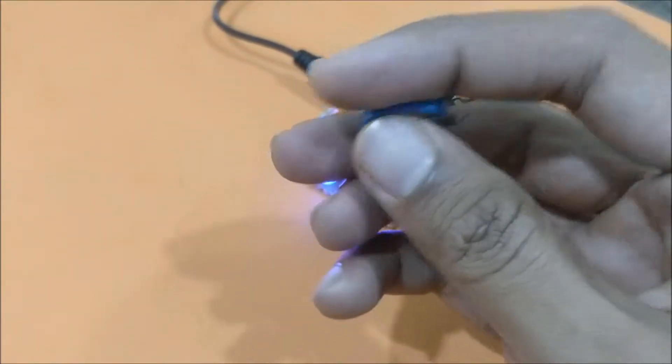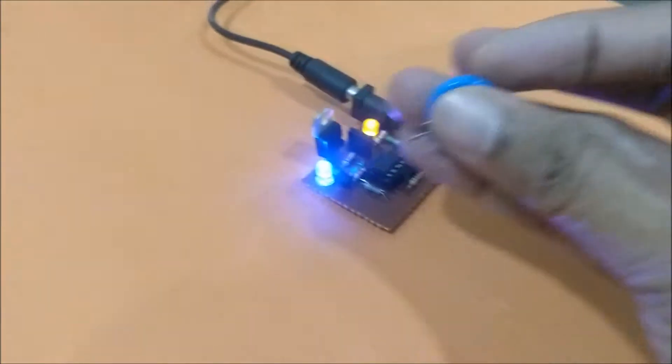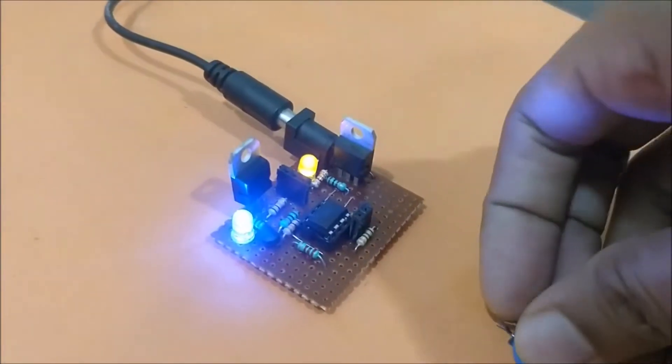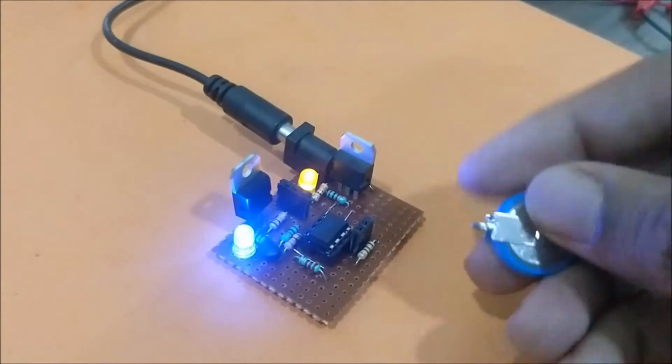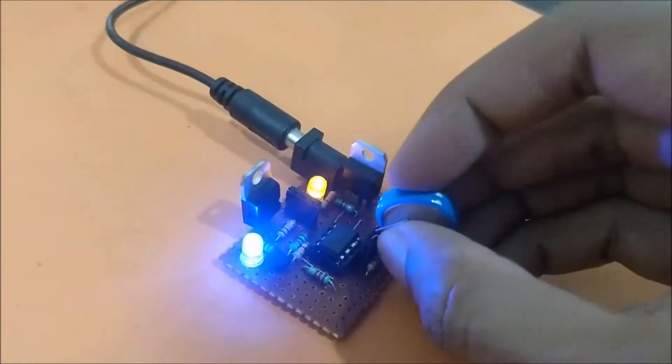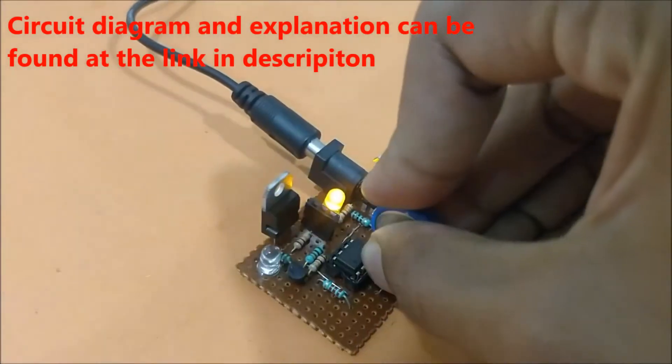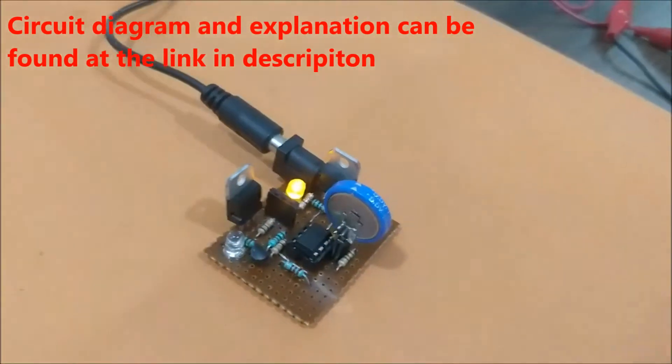This side here is the positive side. So let's connect it to the charger. Let me correct the pins. The circuit diagram for the charger can be found with the link given in the description of this video. As I connect the capacitor, you can see the blue LED turns off, indicating that the charging process has begun.